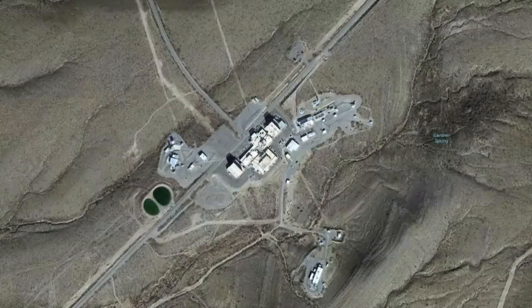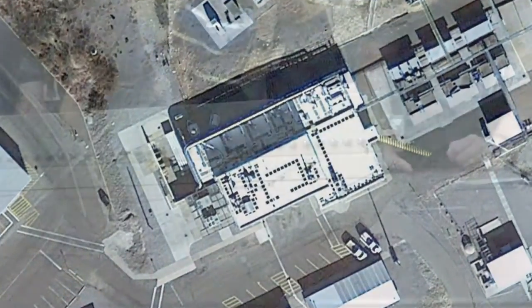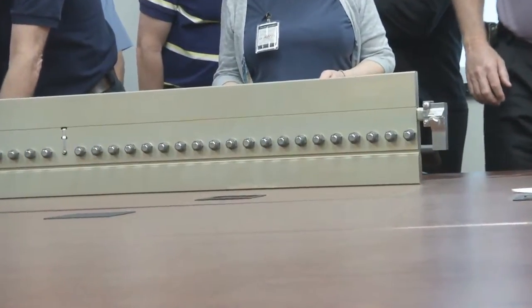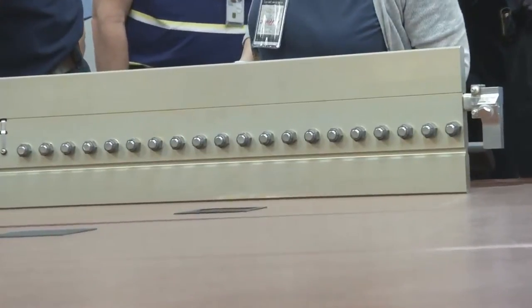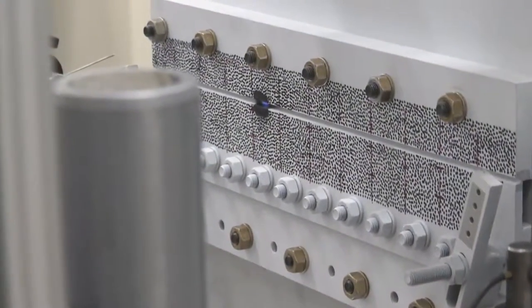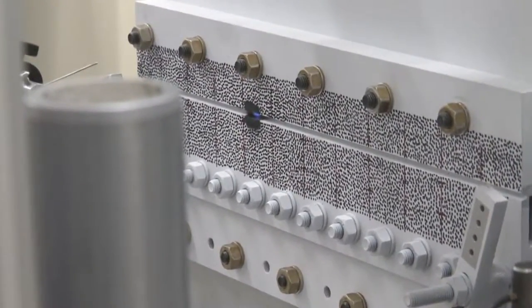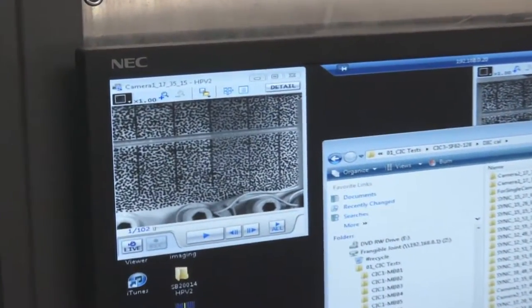Located in this nondescript building, researchers have been testing different frangible joint pieces. As is the norm in research-based testing like this, test planners are performing incrementally experimental tests to create a baseline to better understand the characteristics of the joint.